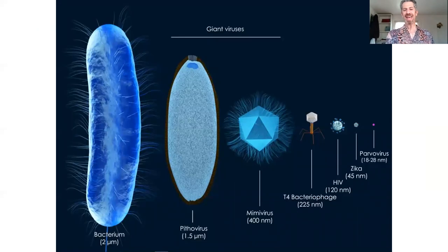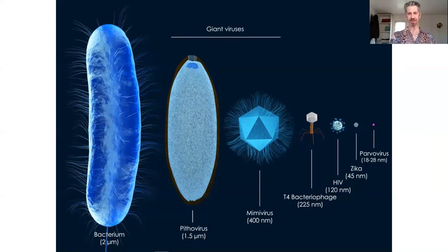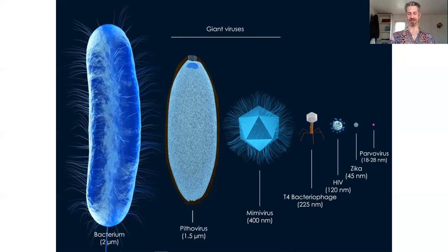Looking at this diagram showing the size of various germs — you don't see parasites, as they are too big for comparative purposes — you can see where the coronavirus fits in terms of size. It's more or less around the size of the HIV virus. I'm showing this so you can compare what a virus looks like to a much larger organism, a bacteria.